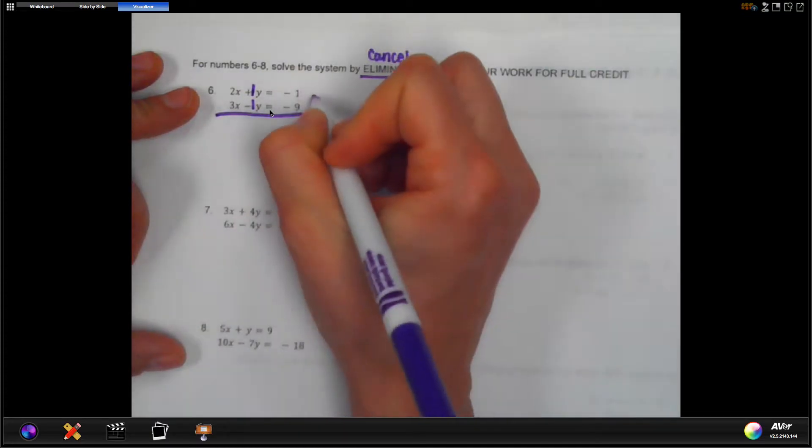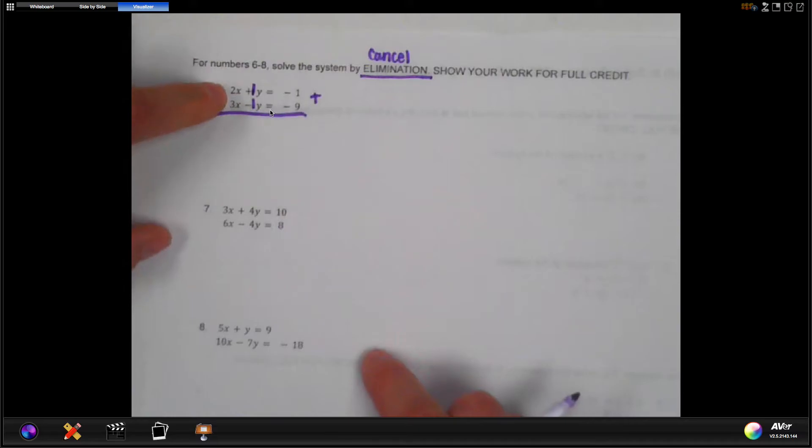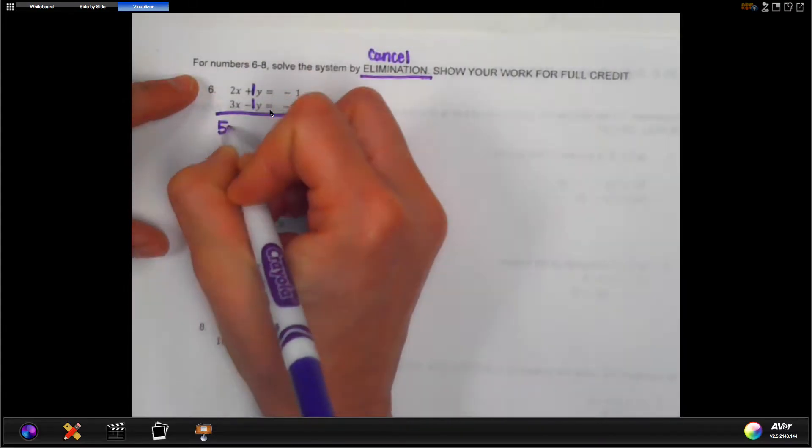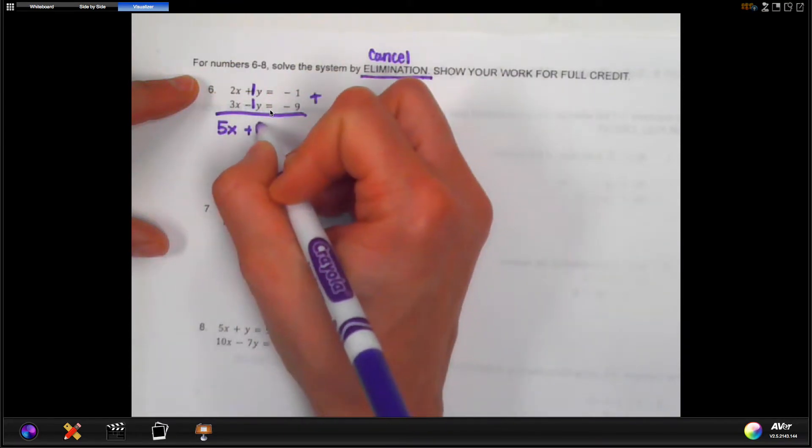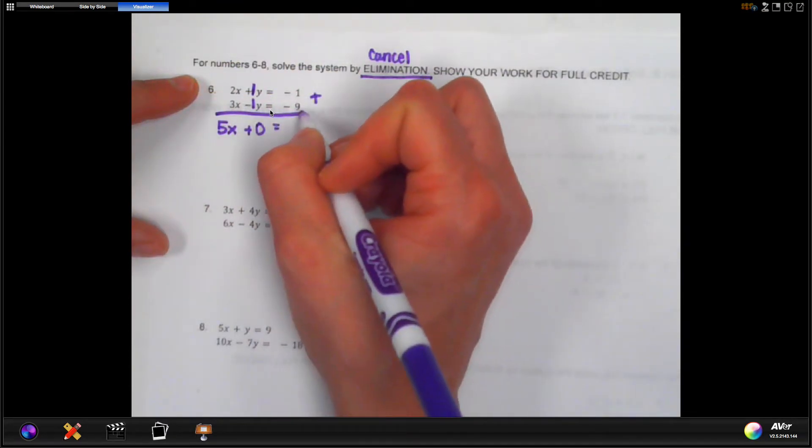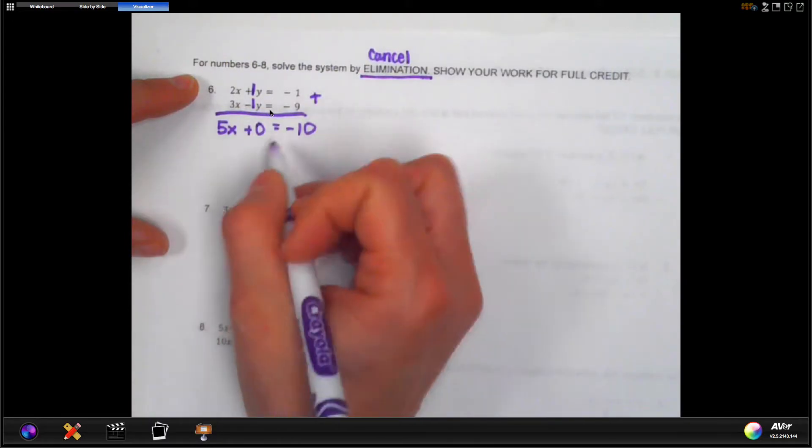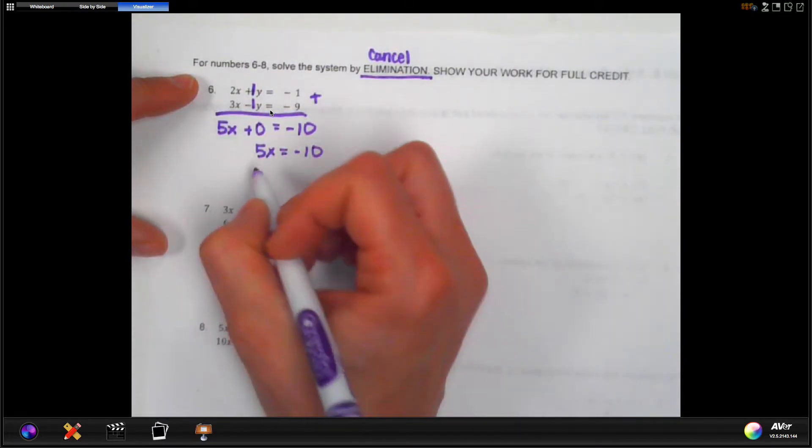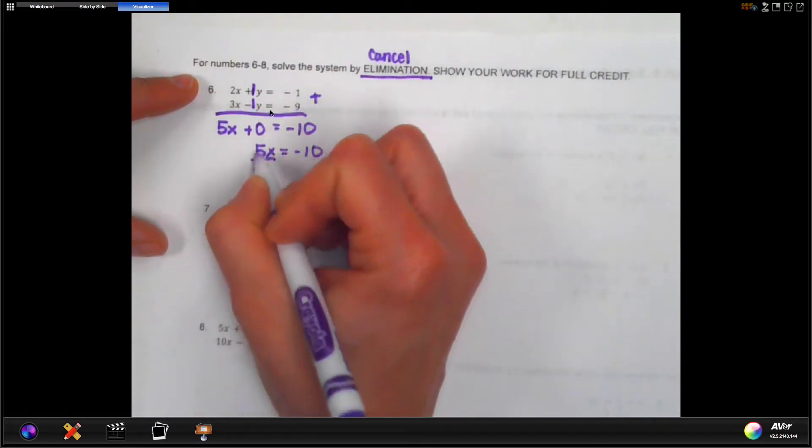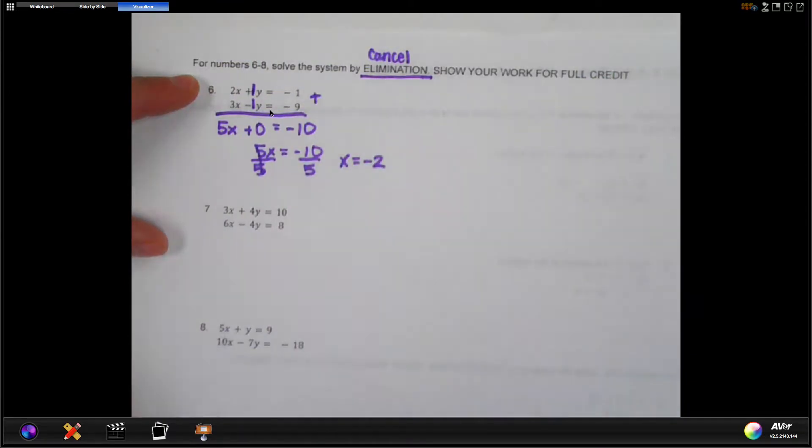That means that we are going to start by adding these two equations up. So two x plus three x equals five x. Positive one y plus negative one y gives us zero. Zero, that's what we needed, and negative one plus negative nine gives us negative ten. Okay, we can drop the zero, so we have five x equal negative ten. And then we're going to solve for x by dividing by five here and dividing by five over here, and x equal negative two. So half of our answer is already done.